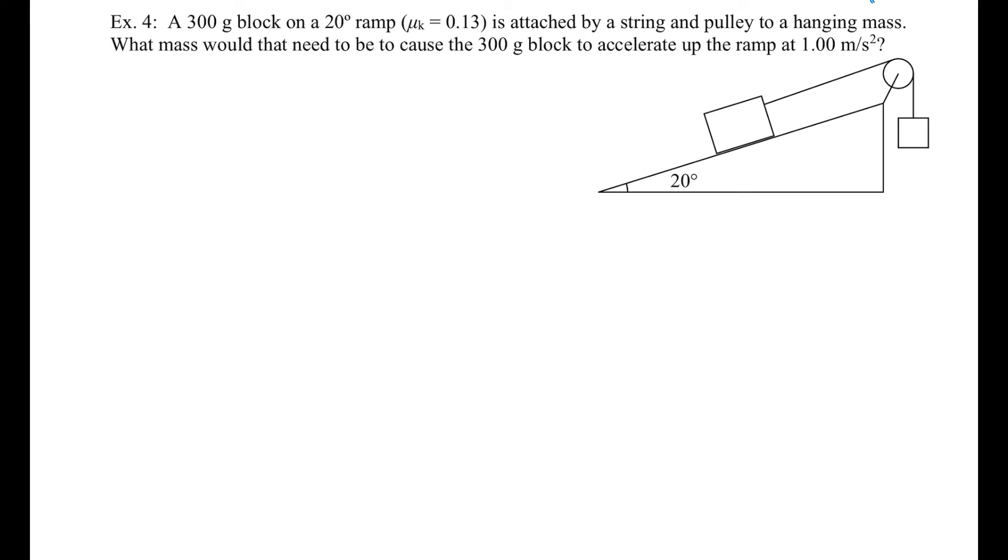Let's draw a free body diagram. And we'll start with that block, that 300 gram block. It looks like this. And this is 0.3 kilograms. And W is pulling down straight on it with a force of the mass, 0.3 times g, which is 9.81. So that's 2.943.